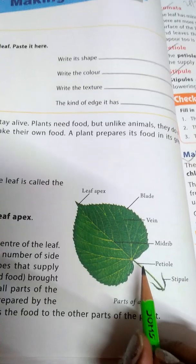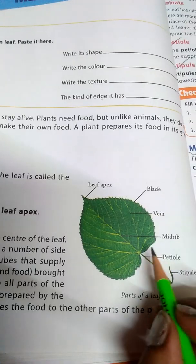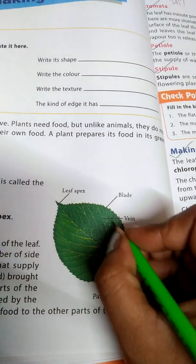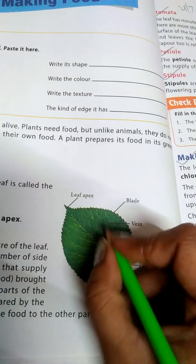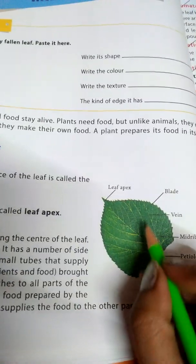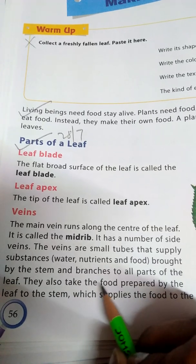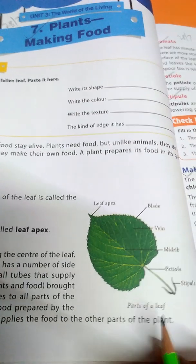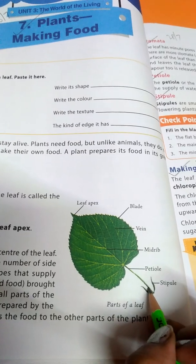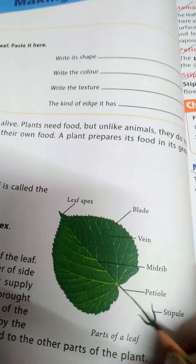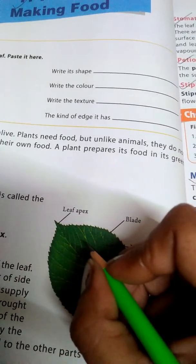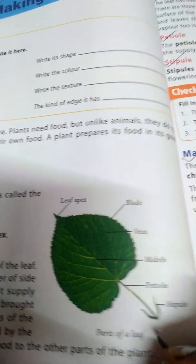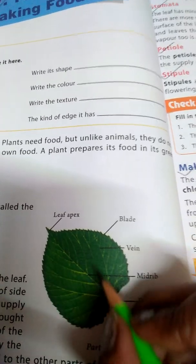These veins are small tubes that supply substances — water, nutrients, and food — brought by the stem and branches to all parts of the leaf. They also take the food prepared by the leaves back to the stem, which then supplies the food to the other parts of the plant.